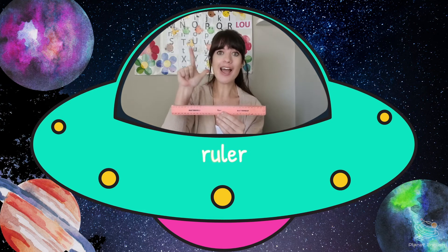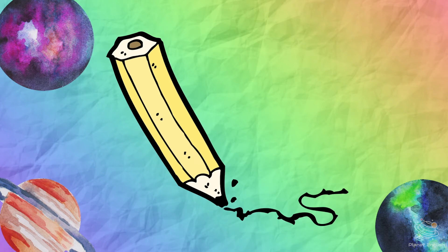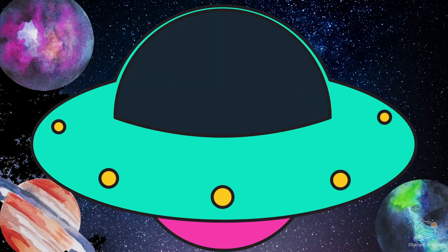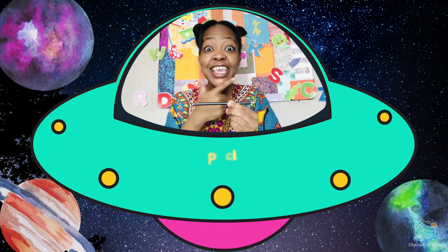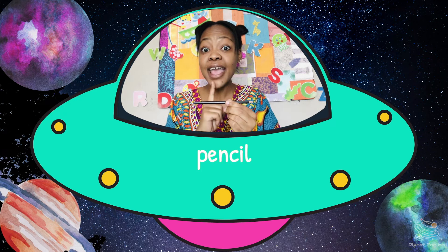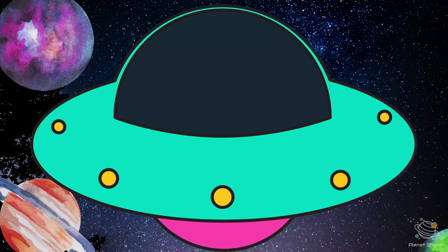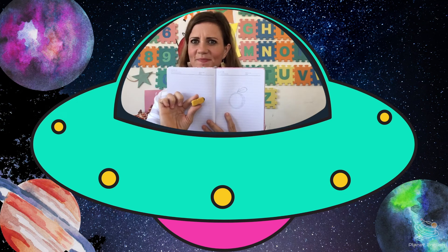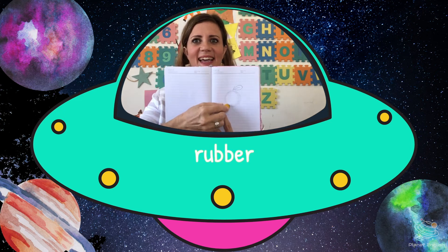What's this? Ruler. Yes, it's a ruler. What's this? Pencil. Yes, it's a pencil. What's this? Rubber. Yes, it's a rubber.